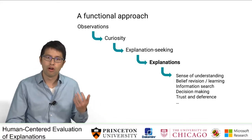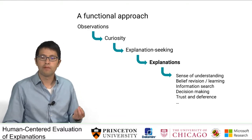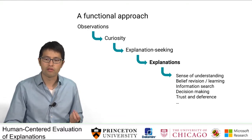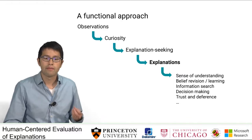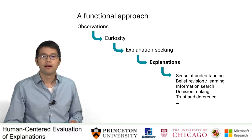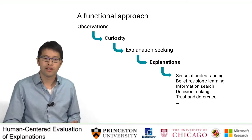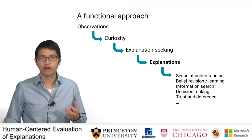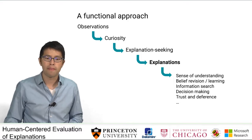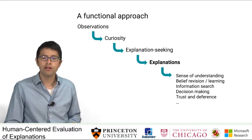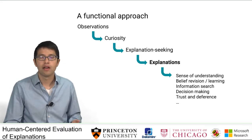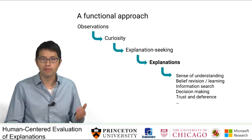More generally, the functional approach of thinking about explanations focuses on the role of how that explanation plays in learning and reasoning. This aligns nicely with what we generate explanations for in the context of machine learning. We want explanations to help humans achieve good outcomes such as better decision making or improving a model.